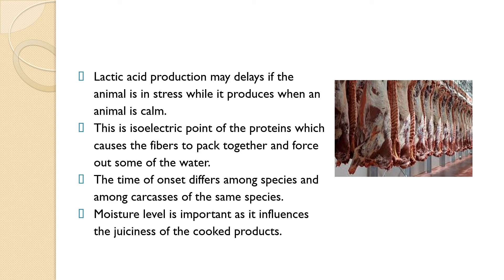Glycogen is important because carbohydrate undergoes chemical degradation to produce lactic acid after slaughter. This post-mortem lactic acid production occurs when the animal is in a rested, comparatively calm state at the time of slaughter. However, stress and exercise just prior to slaughter reduce glycogen levels in the animal, which limits the amount of lactic acid formed post-mortem. The pH reached during rigor mortis is about at the isoelectric point of the proteins, which causes the fibers to pack together and force out some of the water, and moisture level is important because of its influence on the juiciness of cooked products.